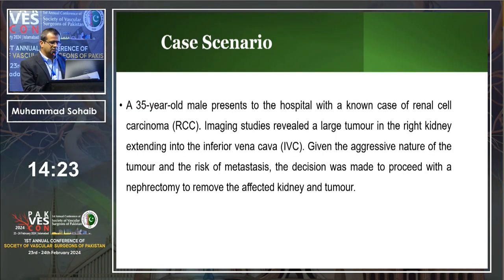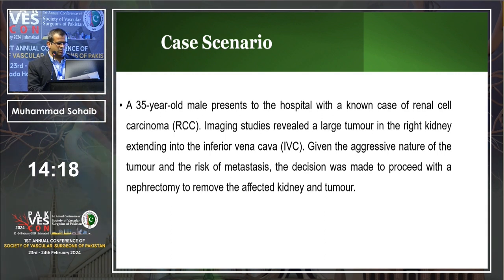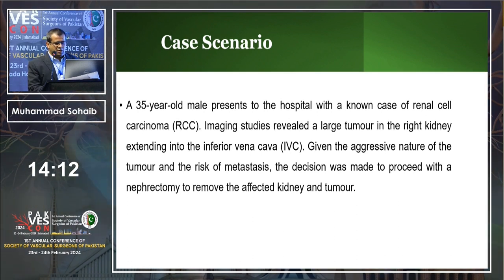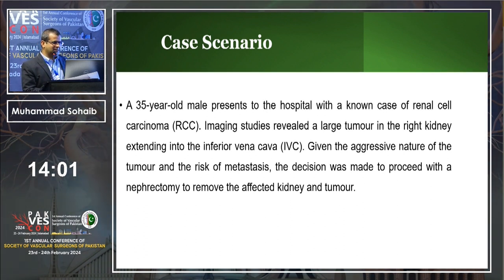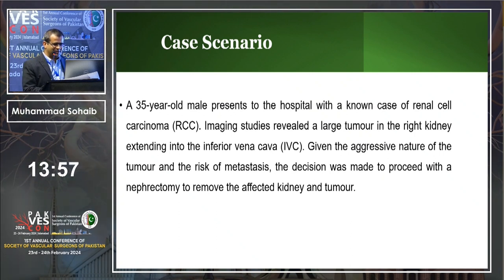The objectives include: massive blood transfusion definition, what is damage control resuscitation, point of care resuscitation, and complications associated with massive transfusion. The case scenario: a 35-year-old male presented with renal cell carcinoma. Imaging revealed a large tumor in the right kidney extending into the inferior vena cava. Given the aggressive nature of the tumor and risk of metastasis, the decision was made to proceed with nephrectomy.